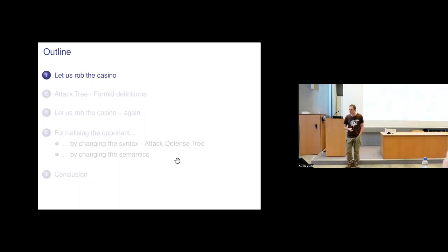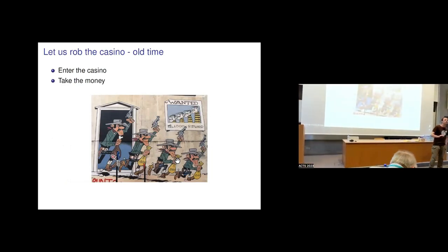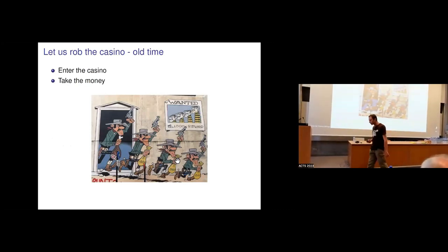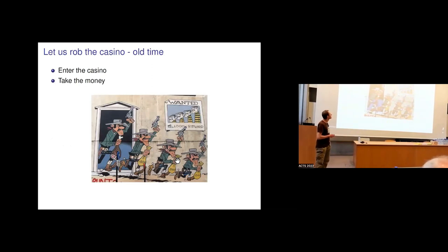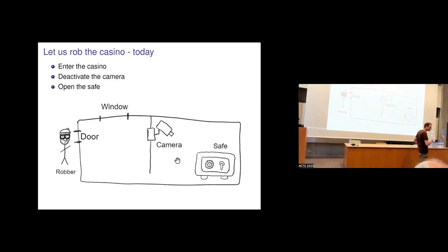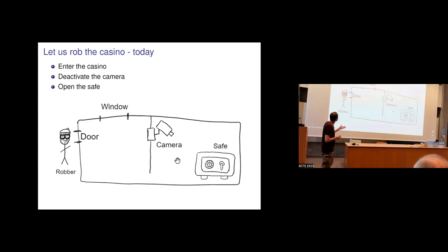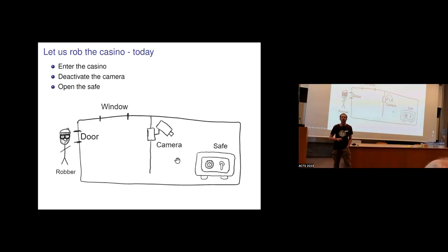We'll go with a kind of toy example: we want to rob the casino. First, think of the old times where things were quite simple — you enter the casino, you take the money, and that's done. Now with more complex technology — and I've made some drawing efforts for the occasion — consider our auto-driving example. A robber wants to open the safe: he enters the casino, deactivates the camera, starts opening the safe, takes the money, and leaves.